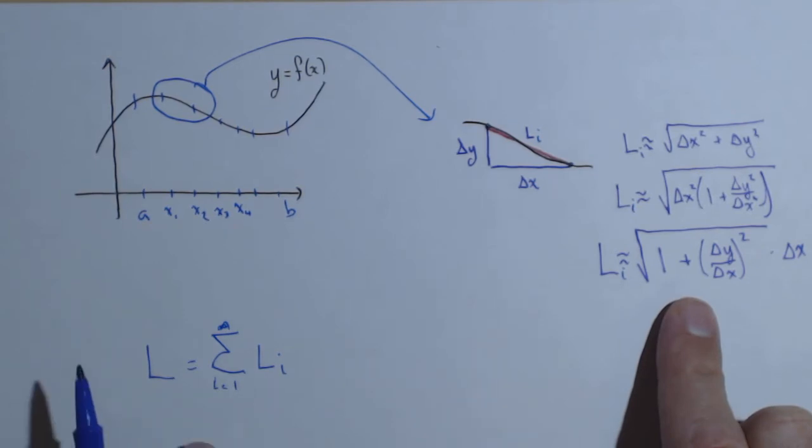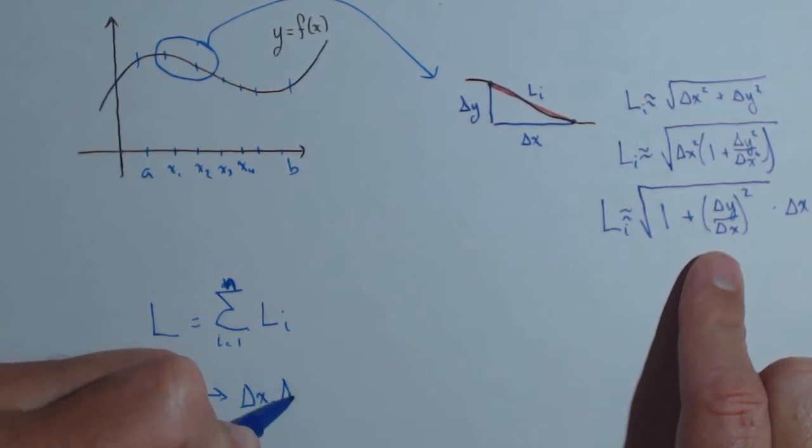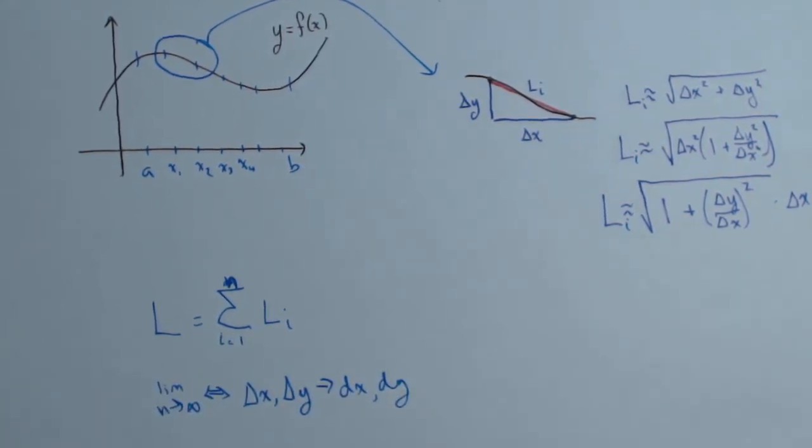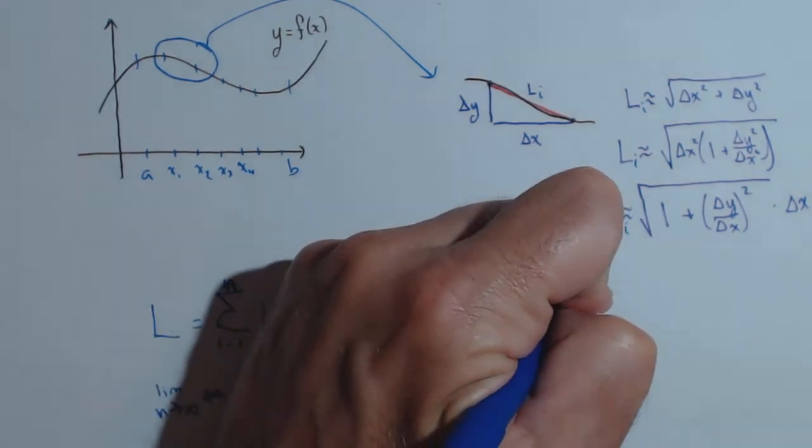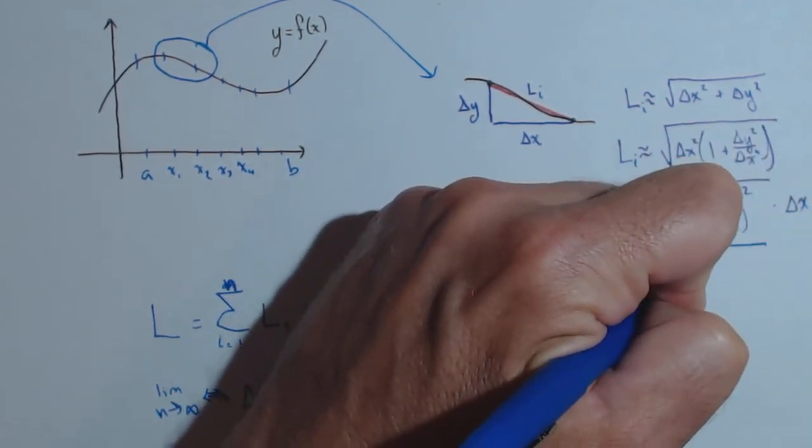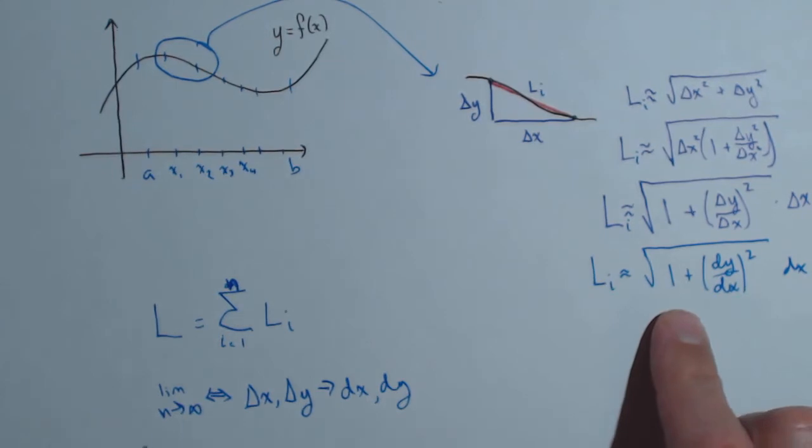So we're going to add these up. Well, as we do that, what we're going to do is we're going to take the limit as n goes to infinity, we're going to make our delta x and our delta y go to infinitely small, they are going to go to our dx and our dy. So what I know is that on that i-th slice, L sub i, I'm basically approximating it with my derivative: square root of 1 plus dy dx squared dx. This is for that one slice.